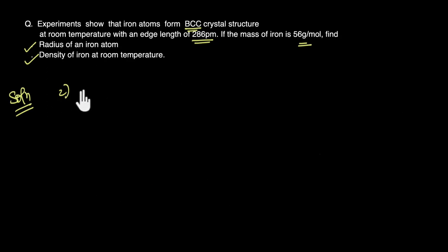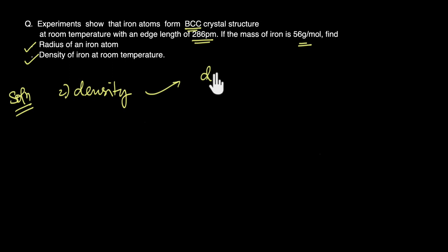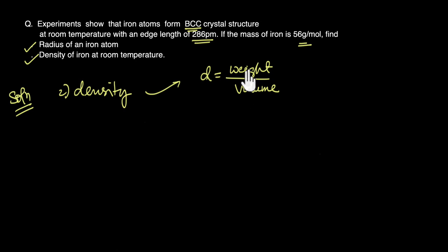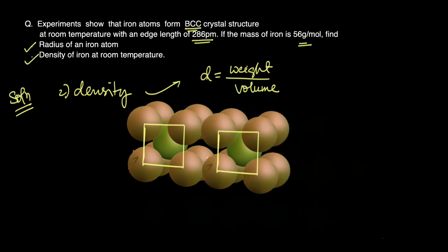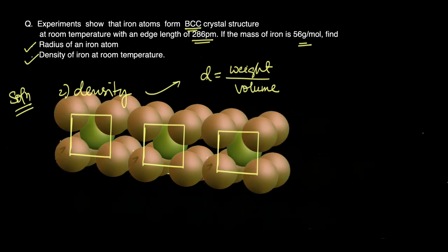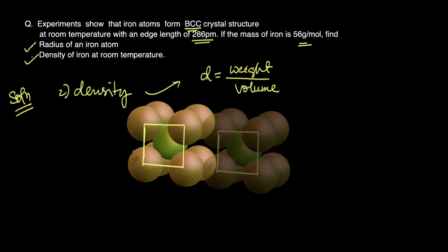Let us now calculate the density of this iron sample. Density is a measure of heaviness — the mass of an object per unit volume. Any crystal or rod of iron is made up of many unit cells. Every unit cell is exactly the same, so the mass per unit volume of a single unit cell equals that of the overall crystal.